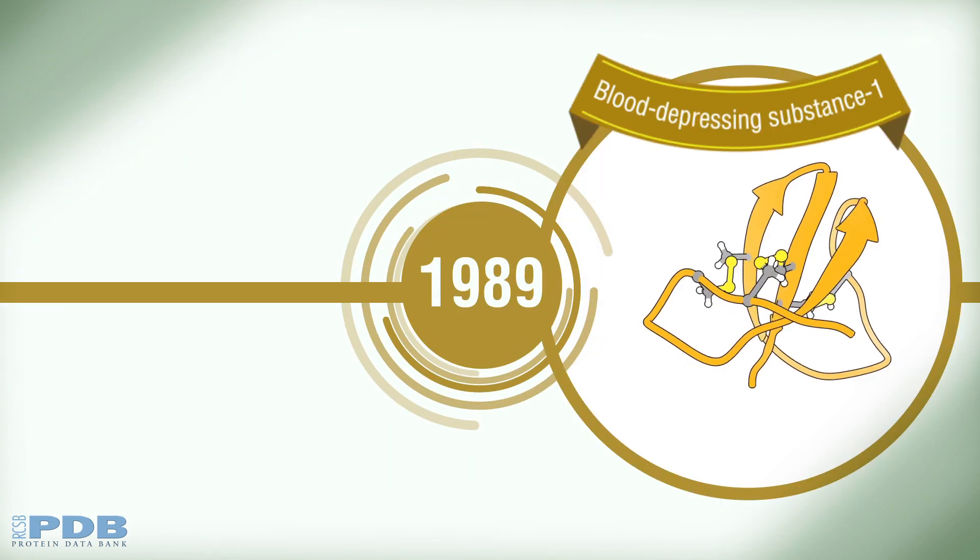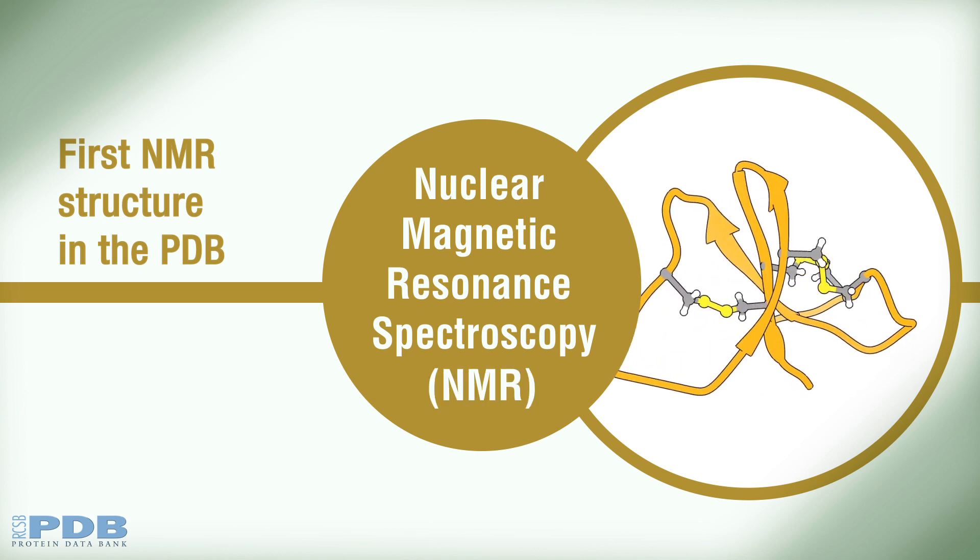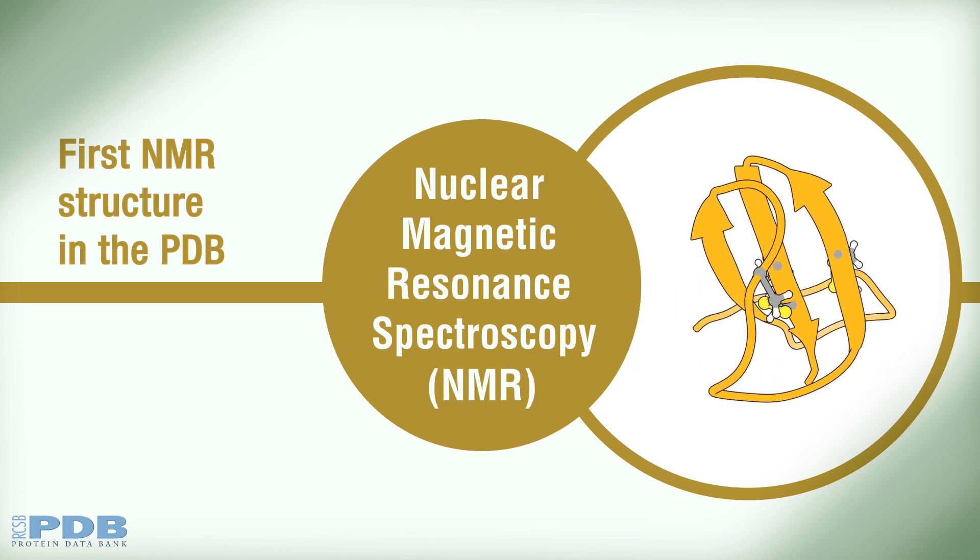In 1989, the first structure determined by a biophysical method called Nuclear Magnetic Resonance Spectroscopy, or NMR, was deposited to the PDB.